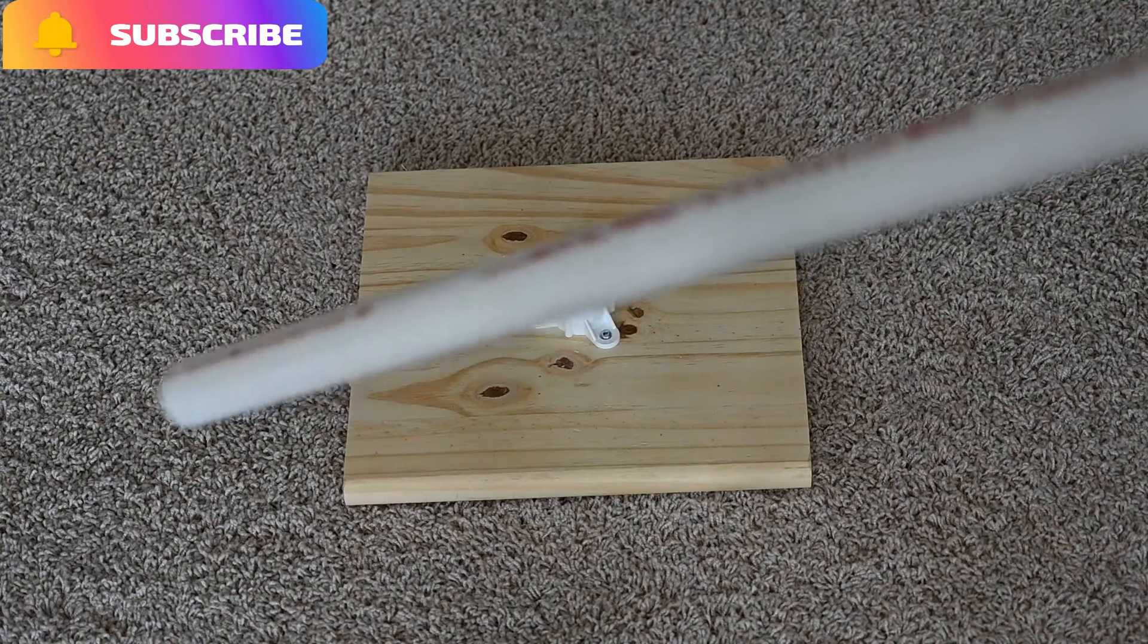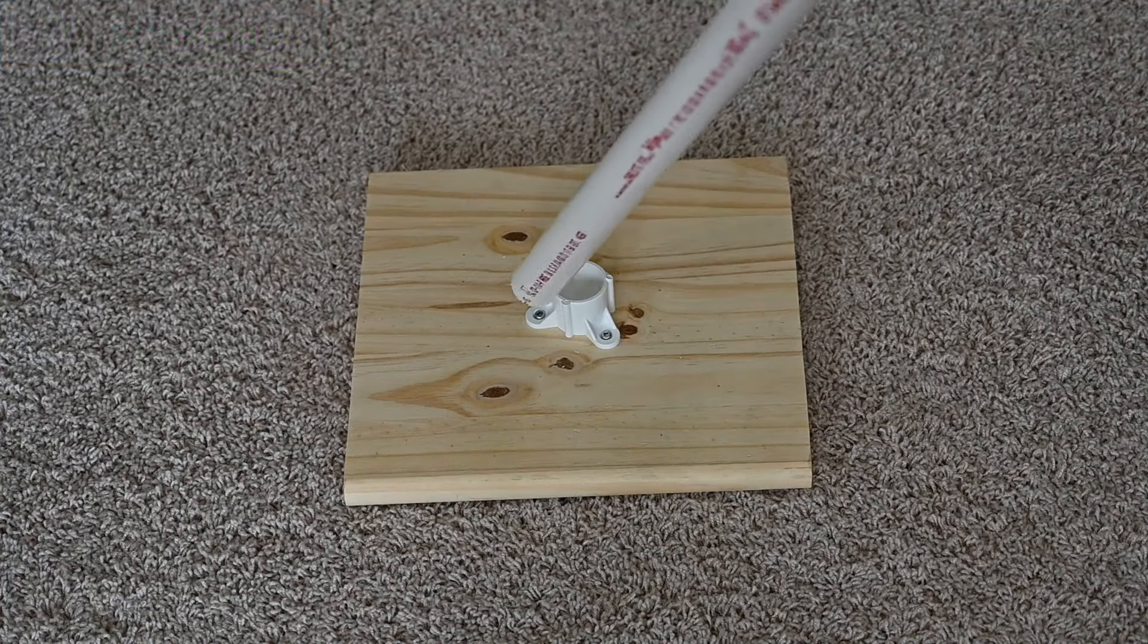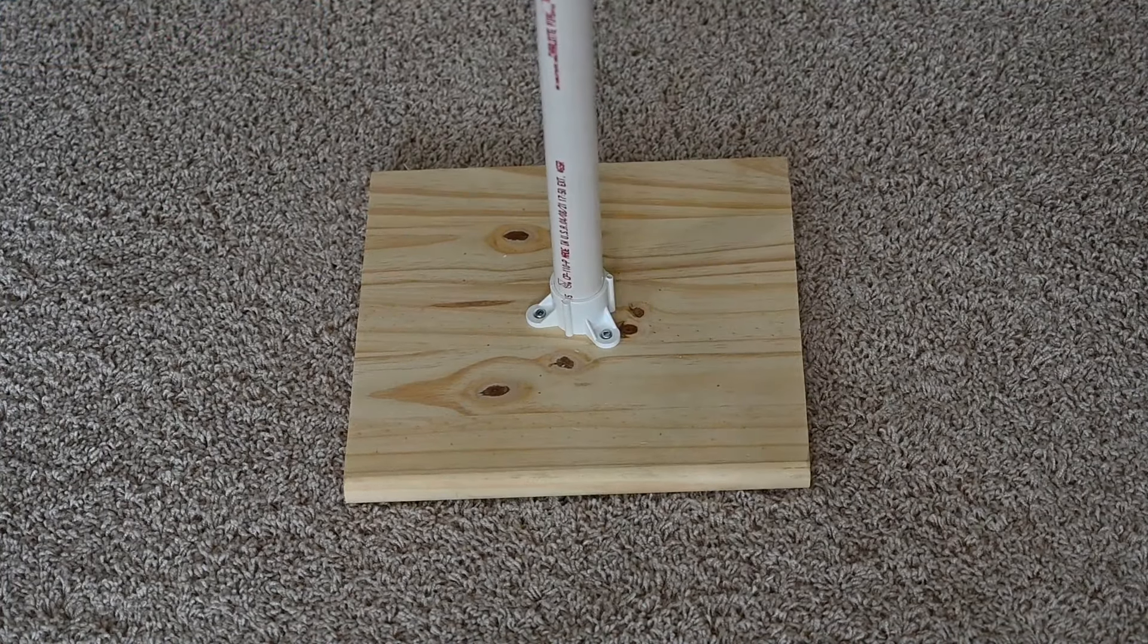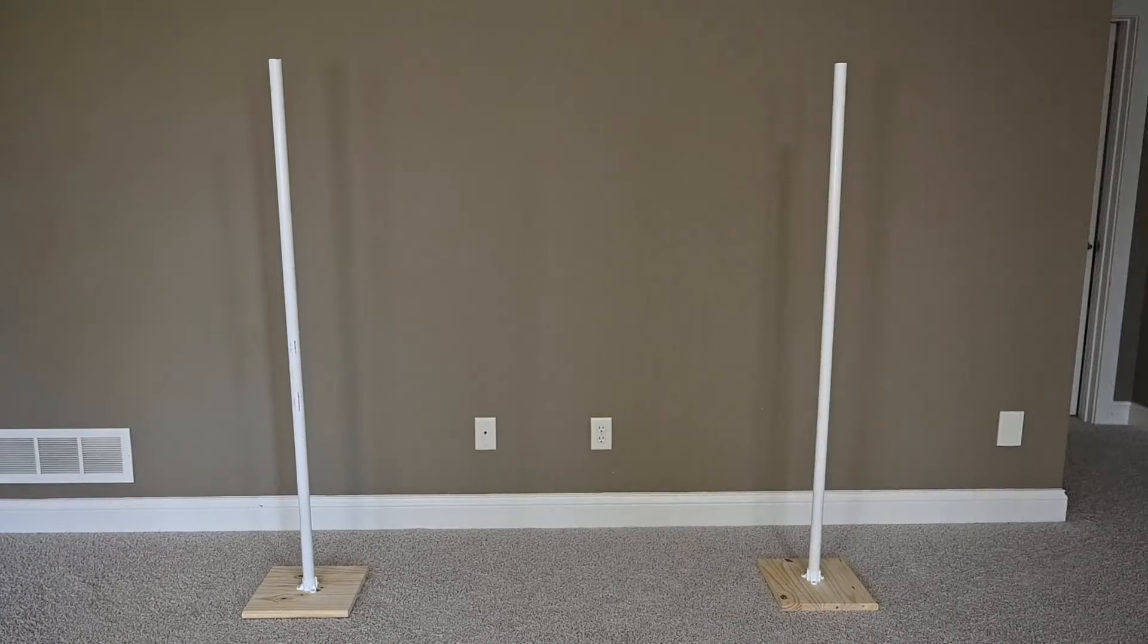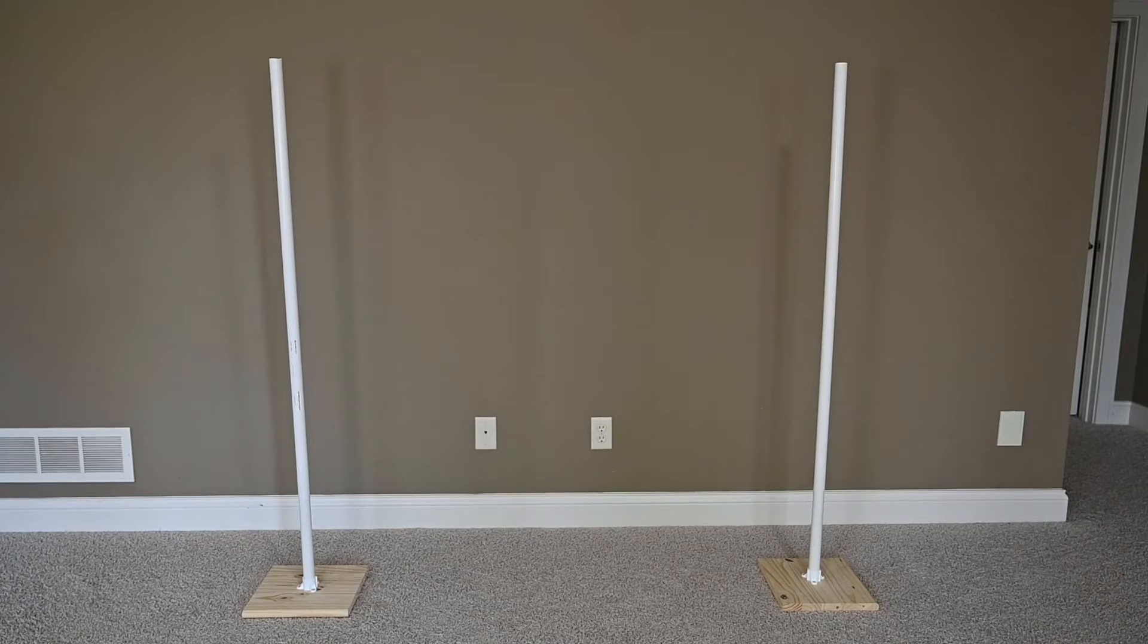Now all you need to do is insert the five feet PVC pipe into this one inch table cap as shown, and repeat the same steps to the second one as well.